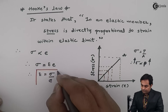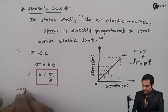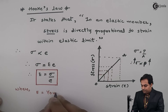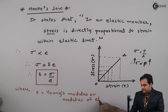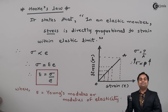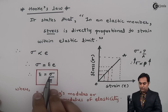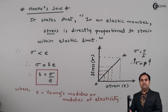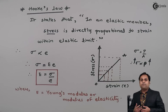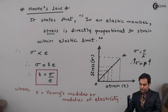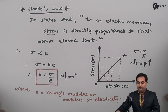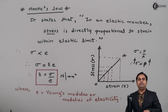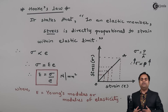Capital E is called Young's modulus or modulus of elasticity, and it is given by the ratio of stress to strain. This modulus decides how elastic the material is. The unit of Young's modulus is the same as the unit of stress — newton per mm² — because strain is dimensionless. So with Hooke's Law we obtain Young's modulus, and that concludes this video.